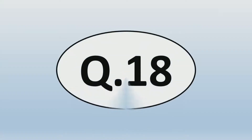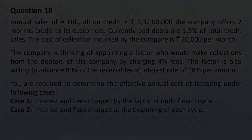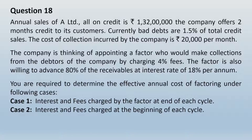Let us take up question number 18. Annual sales of A Limited, all on credit, is rupees 1 crore 32 lakhs. The company offers 2 months credit to its customers. Currently bad debts are 1.5 percent of total credit sales. The cost of collection incurred by the company is rupees 20,000 per month.